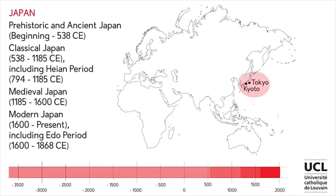Domain 1: Japan. The important historical periods include prehistoric and ancient Japan, classical Japan including the Heian period, medieval Japan and modern Japan including the Edo period. The important sites include Tokyo and Kyoto. Japan is known as a country which has hundreds of kami, that is divine spirits linked to various elements of nature.